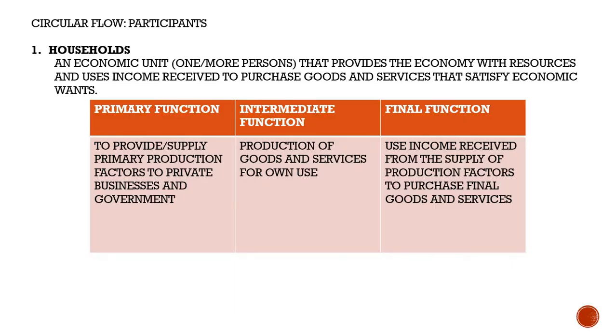Hello and welcome. In this video we will be looking at chapter 2, which discusses the market system and the circular flow. We're going to begin with the circular flow, which is a diagram that shows the flow of goods and services between the different participants in the economy. So we're going to discuss the different participants in the economy.